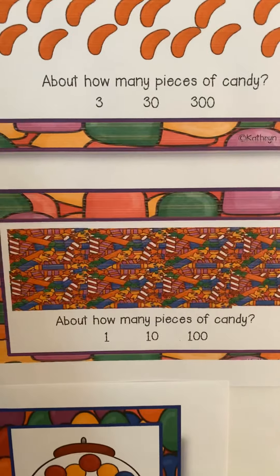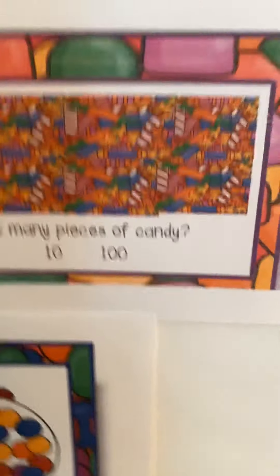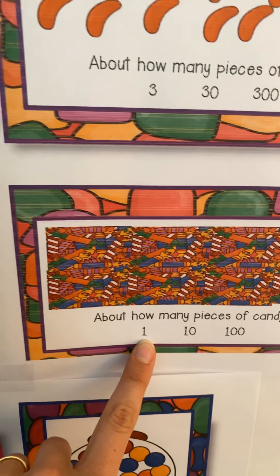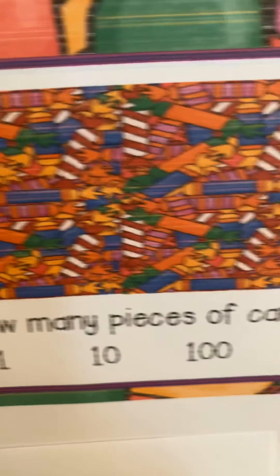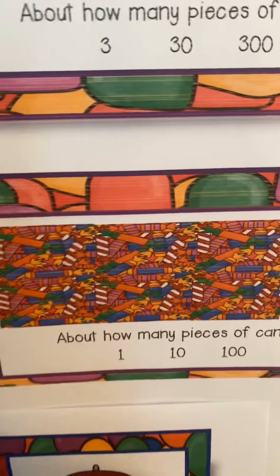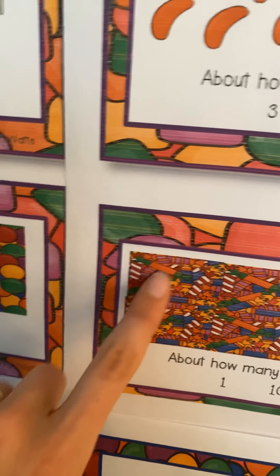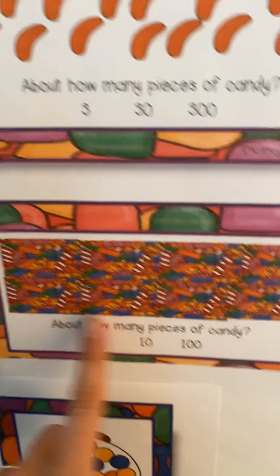Let's look at this one. Look at all that candy! What are we going to guess? Is this reasonable at all? No. That is not even reasonable. Nowhere close to one. Ten is not even close to being reasonable — there's way more than ten. There's ten right here. So the right answer has to be one hundred. There has to be about one hundred there.